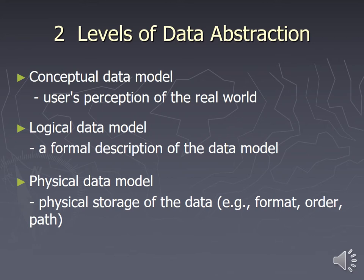When looking at databases, there are levels of abstraction to consider. There is the physical level — how we physically store data — and before that, the conceptual level, which is how we perceive the real world. After perceiving the data, we logically fit it into a structure for a computer to understand — a formal description of the data model. Finally, the physical data model is the actual storage of the data: its format, order, and path.